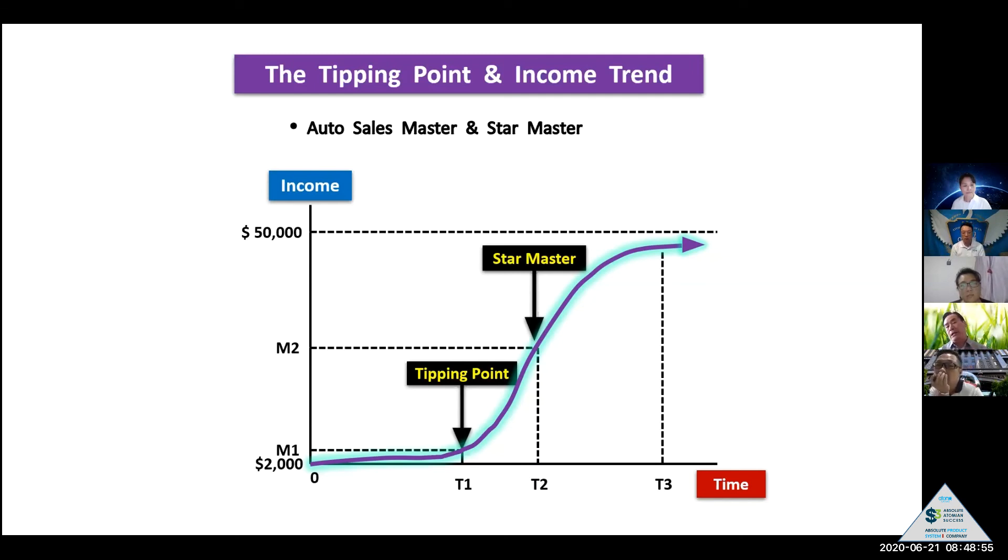Right at the star master, then income ceiling 50,000 per month - that high skyrocket business is growing. Taking time until auto sales master and up to star master and up to the ceiling of income limit, the same time, almost a period. So we need the patience, and we need calm and believe in the faith.